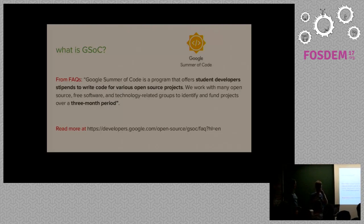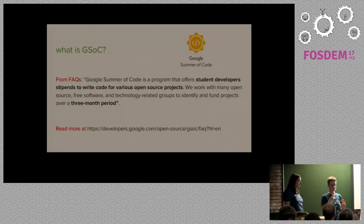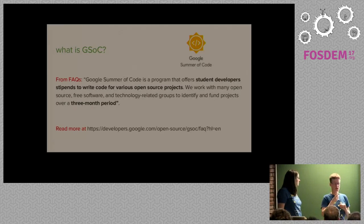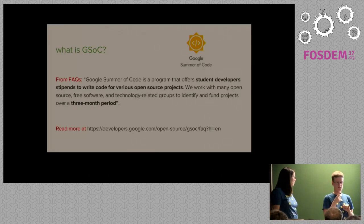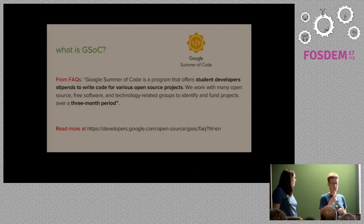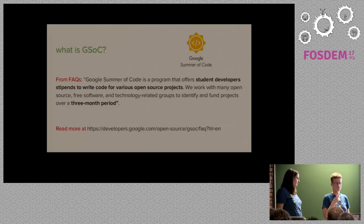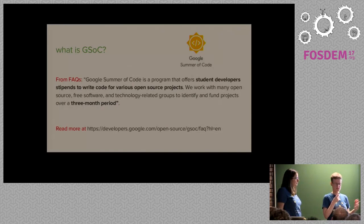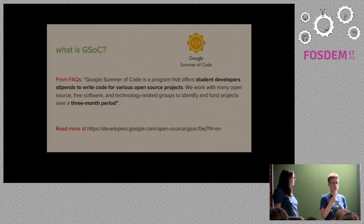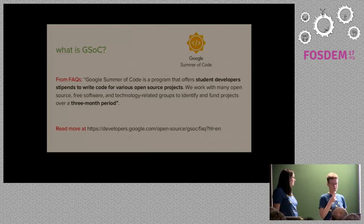The students apply in around April and get selected by open source projects participating in Summer of Code. They get paired to mentors — each student gets at least one mentor to guide them. On the Google side, Google selects which organizations take part, such as OSGEO, Debian, KDE, or other open source projects. The organization then takes care of selecting the students.